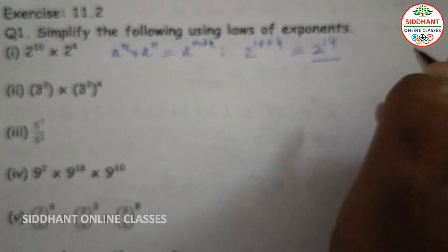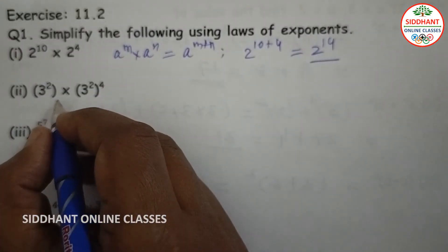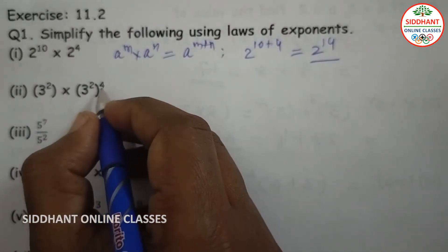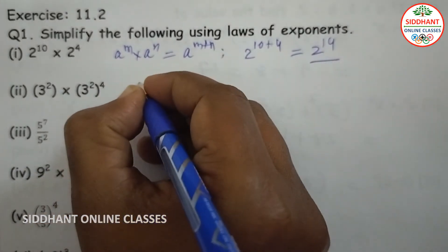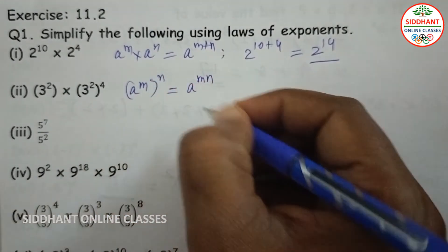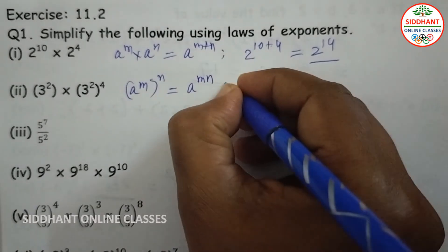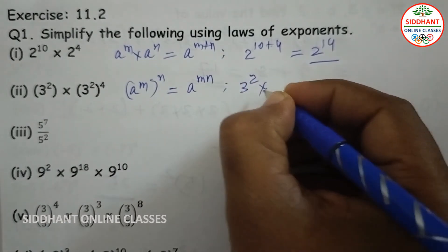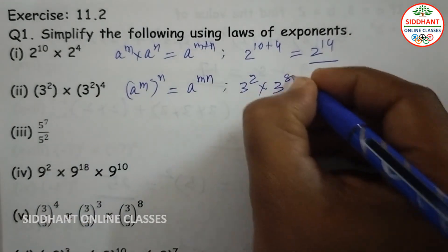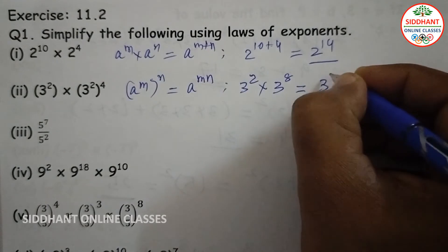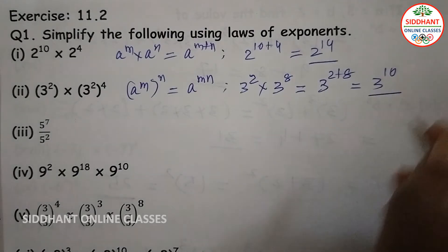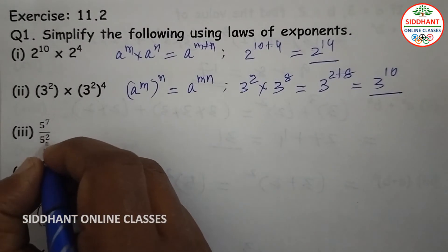Next, 3 to the power of 2 into 3 to the power of 2, whole power 4. We know a to the power of m, whole power n, equals a to the power of m times n. So here, 3 to the power of 2 into 3 to the power of 2 into 4. Bases are same, so 3 to the power of 2 plus 8, that will be 3 to the power of 10.